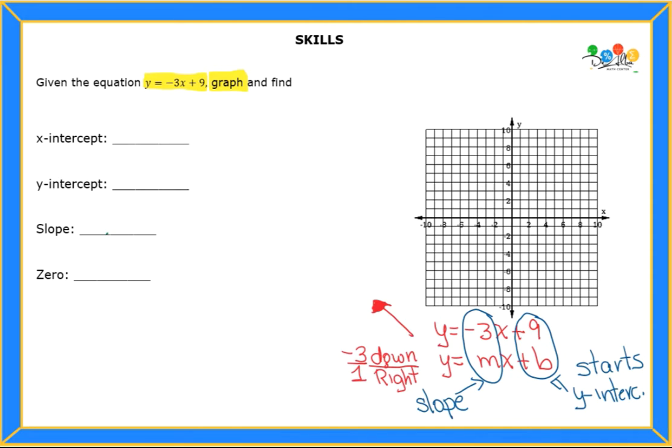So what's the number that I'm going to start with? Well, the number that I'm going to start with is the y-intercept, which is positive 9, and that is way up here.